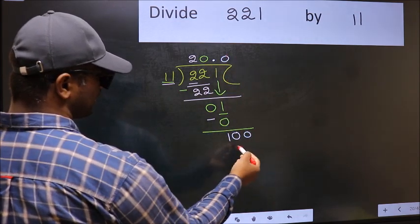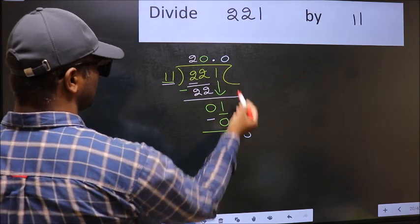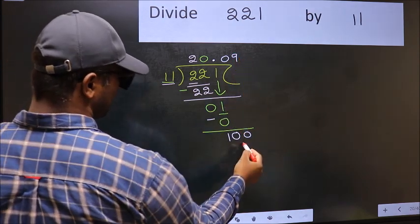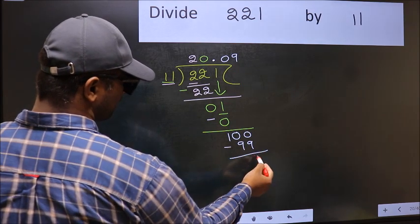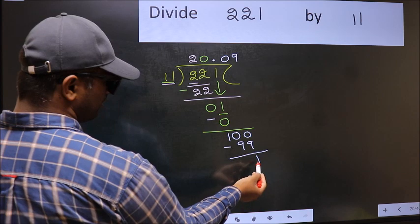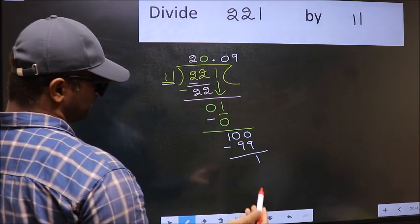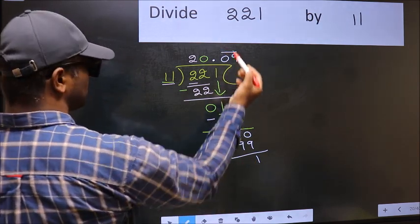Now, 100. A number close to 100 in 11 table is 11 nines, 99. Now, you should subtract. We get 1. We got 1 again. That means, we get bar on this number.